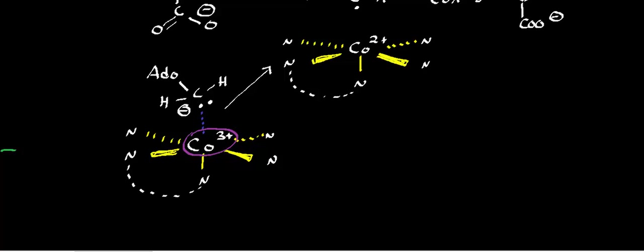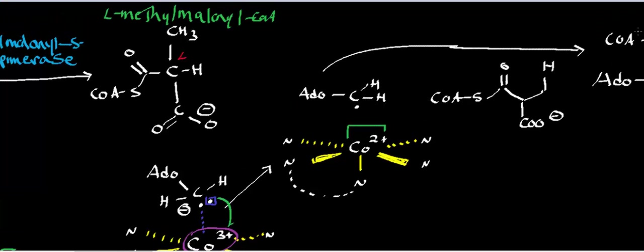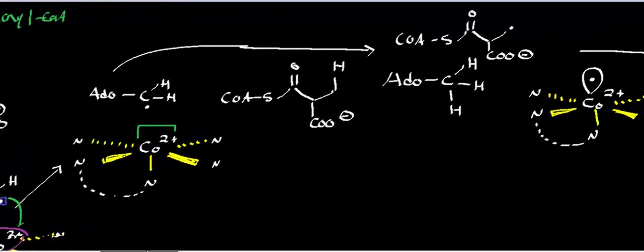The next step is going to be radical formation. So one of these electrons right here on this deoxyadenosine anion is going to be transferred onto the cobalt. Notice I used a fish hook arrow to denote that it's just a one electron transfer. So what that generates is cobalt in the 2-plus state. Again, the cobalt is going to be chelated in the corin ring system at all times, and that generates this deoxyadenosine radical. And that's what's going to be used to carry out the reaction.